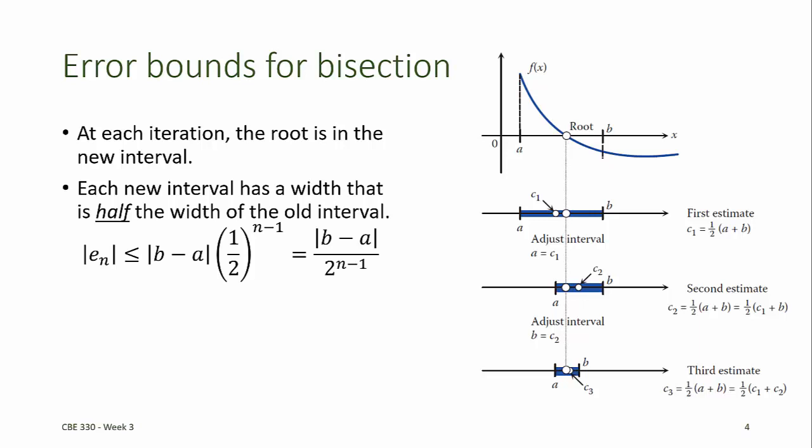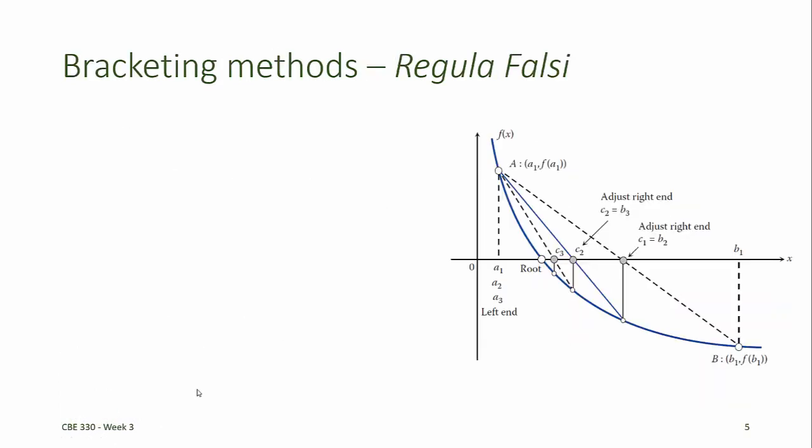Therefore, the absolute value of the error on the root at the nth iteration is known explicitly. When n equals 1, this formula gives the absolute error of our estimate for the root on the original interval from a to b. For higher n, the error gets cut in half n times. We can solve this equation for n to find the number of iterations required to achieve an estimate with a desired error bound epsilon.